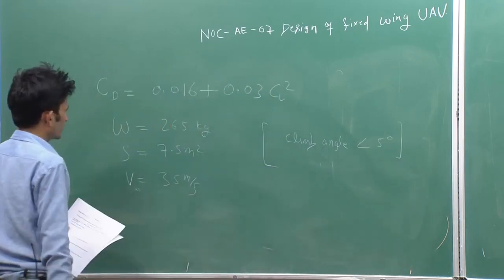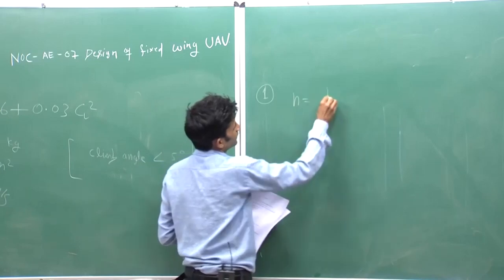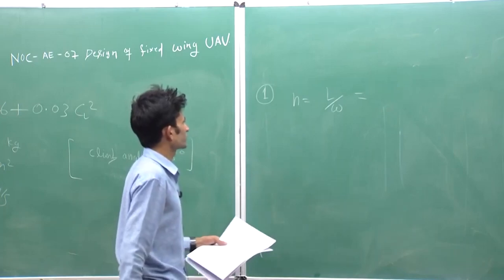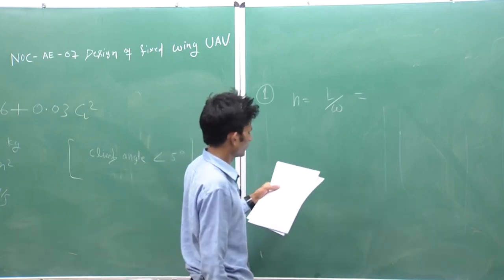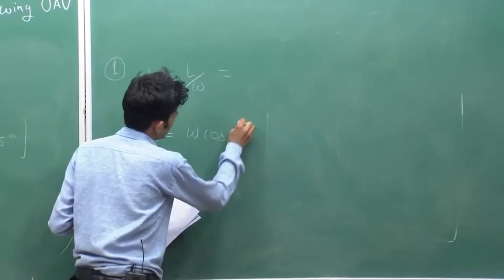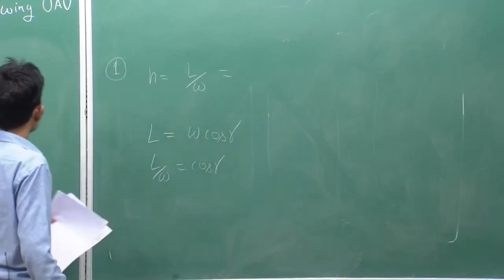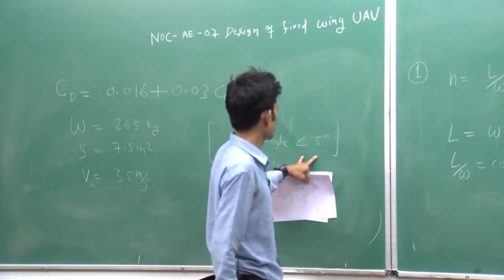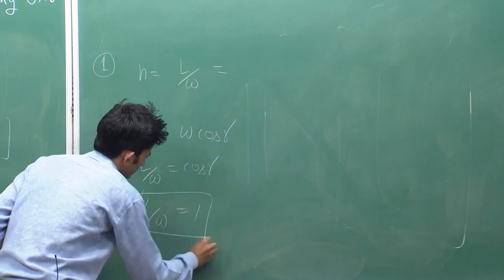In the first question, you have to find the load factor, which is lift divided by weight. At cruise condition your lift equals weight, so the load factor is 1. But at climb condition, lift is balanced by W·cos(γ). Since the climb angle is less than 5 degrees, cos(γ) is approximated as 1 and sin(γ) as 0. So your answer will be 1.